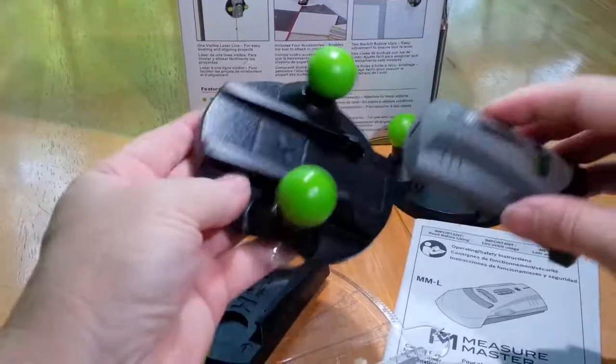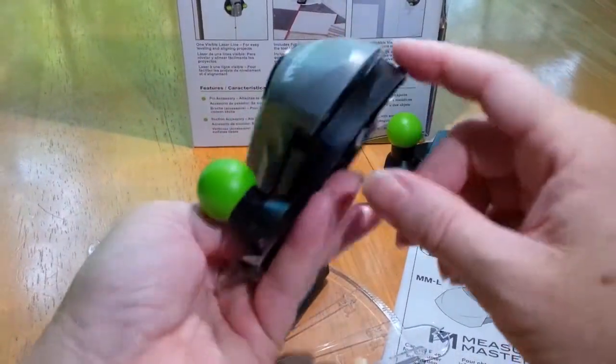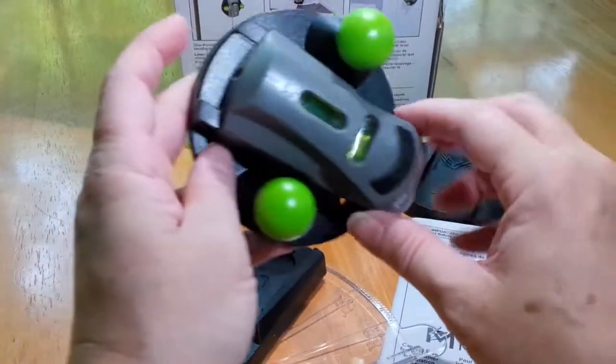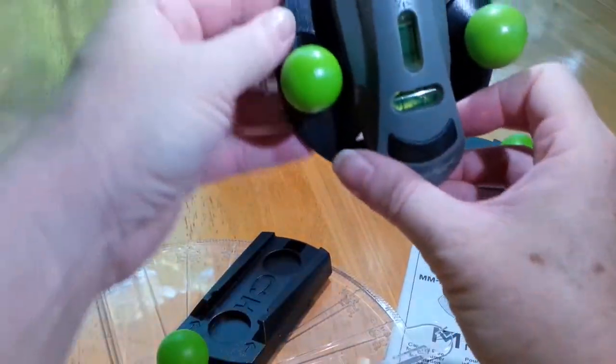You slide it into the holder this way and it snaps in. Once you take that tape out, it'll snap in and then you can attach it any way you want on the wall.